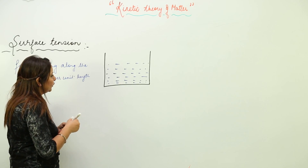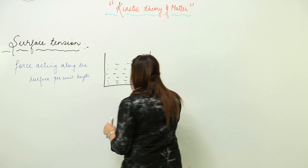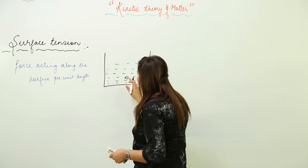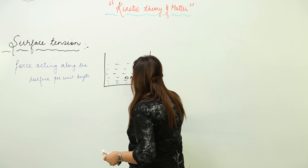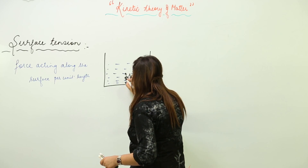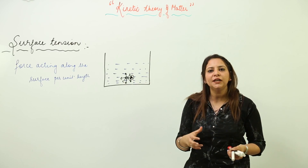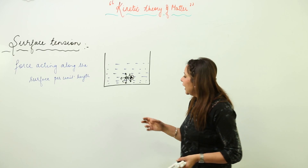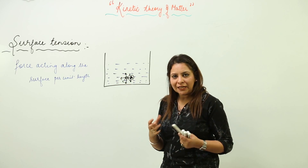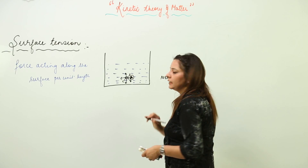First I am going to explain the cause, then we'll come to the main point of what surface tension is. Suppose I have a beaker with water. Consider a water molecule at point A. This molecule is being attracted from all sides by cohesive forces — forces that operate between molecules of the same kind. All these forces are equal and opposite, so they cancel out, and the net force acting on the molecule is zero.